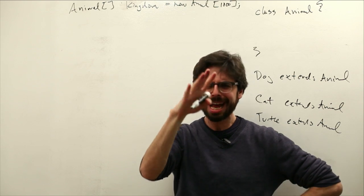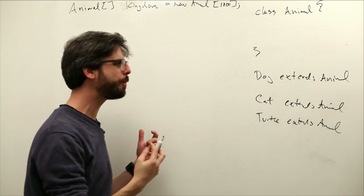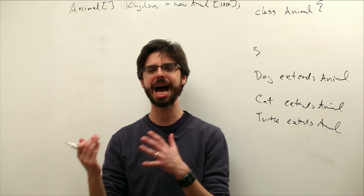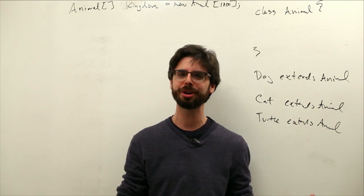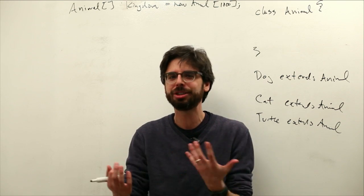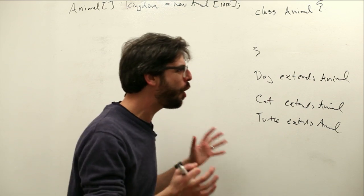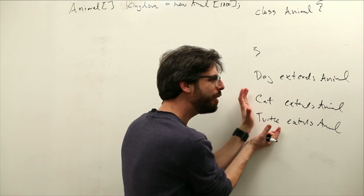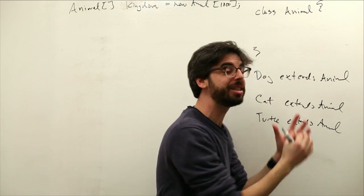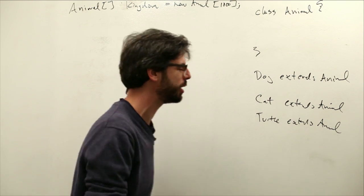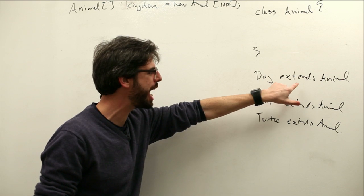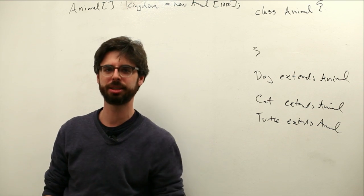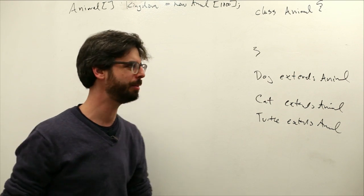But would that have been your first instinct? Maybe you would have said I need my dog array to keep track of all my dogs, my cat array to keep track of all my cats, my turtle array to keep track of all my turtles. This is going to get unwieldy pretty fast. One of the reasons for doing this inheritance structure is it allows us to collect all of these objects that have the same parents together and work with them together. This is polymorphism. Polymorphism is going to allow us to put all these different kinds of animals into the same generic array of animal objects.